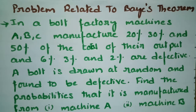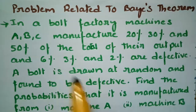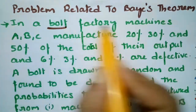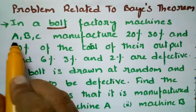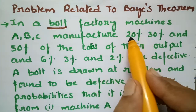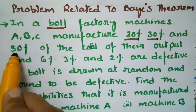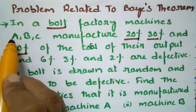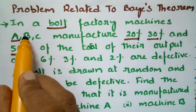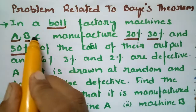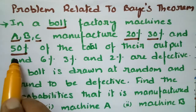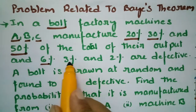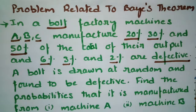This problem is related to Bayes theorem. We are using Bayes theorem to solve this question. In a bolt factory, machines A, B, and C manufacture 20%, 30%, and 50% of the total output respectively. Out of their outputs, 6%, 3%, and 2% are defective bolts.